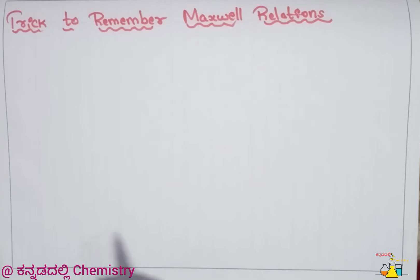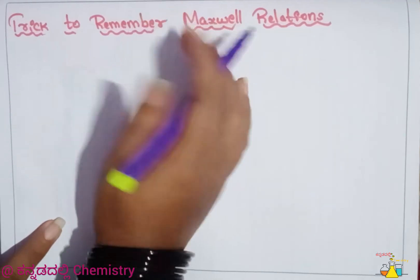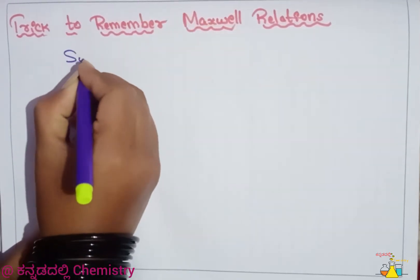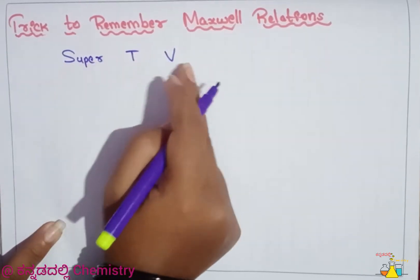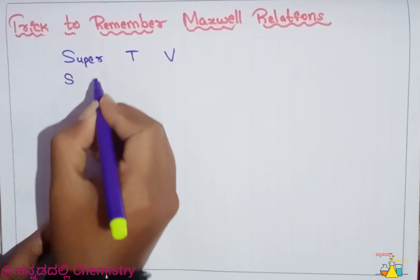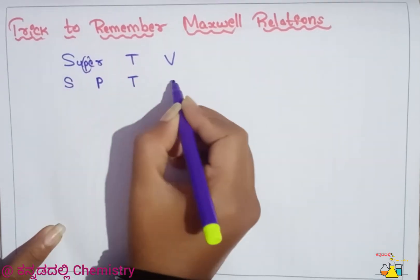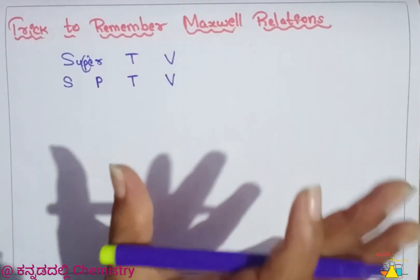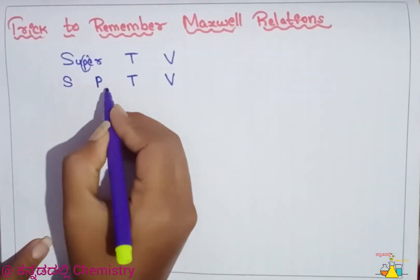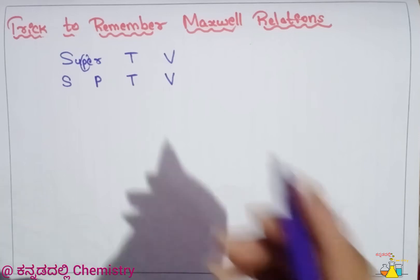We will explain the Maxwell relationships involving entropy, temperature, volume, and pressure — the SPTV variables. The order of the Maxwell relationships will be shown. All 4 relationships are now done.